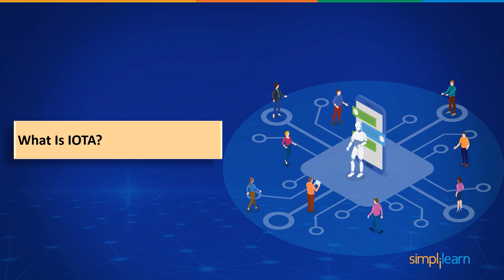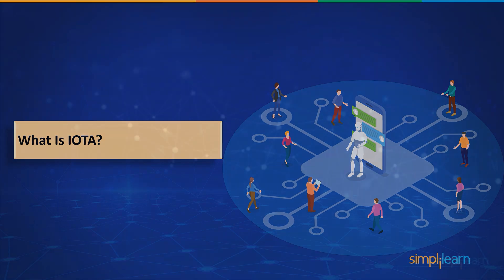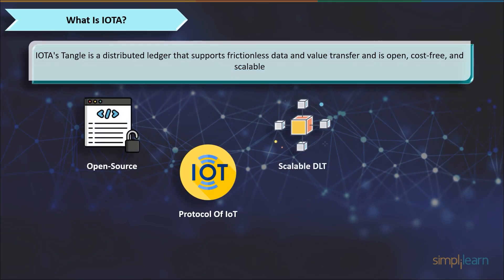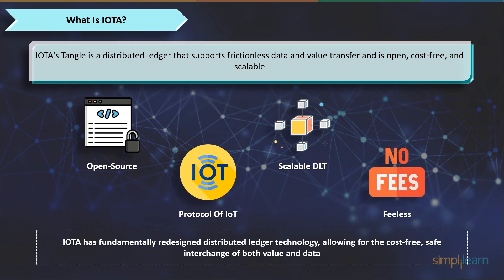So what is IOTA's Tangle? IOTA's Tangle is a distributed ledger that is open, cost-free, and scalable, and is made to facilitate frictionless data and value movement. The IOTA network is the backbone of IoT and is designed for the Internet of Things, with low resource requirements, tamper-proof data, and fee-free microtransactions. The Internet of Everything is a network for exchanging money and data between devices, and this distributed ledger is the first one designed for it.